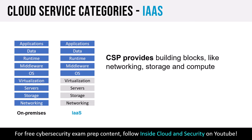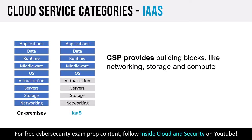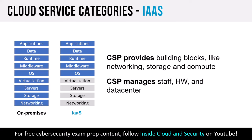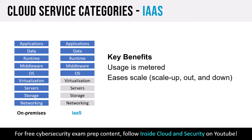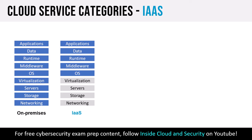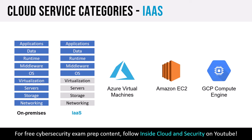In the IaaS model, the CSP provides the building blocks — network, storage, and compute — and manages the staff, hardware, and data center. This means usage is metered, scale is easier, and energy and cooling costs in the data center are reduced. Examples include Azure Virtual Machines, Amazon EC2, and Google Cloud Platform's Compute Engine. In PaaS, the customer is responsible for deployment and management of apps; the CSP manages provisioning, configuration, hardware, and the operating system. Core infrastructure is updated by the provider — entirely off our plate.